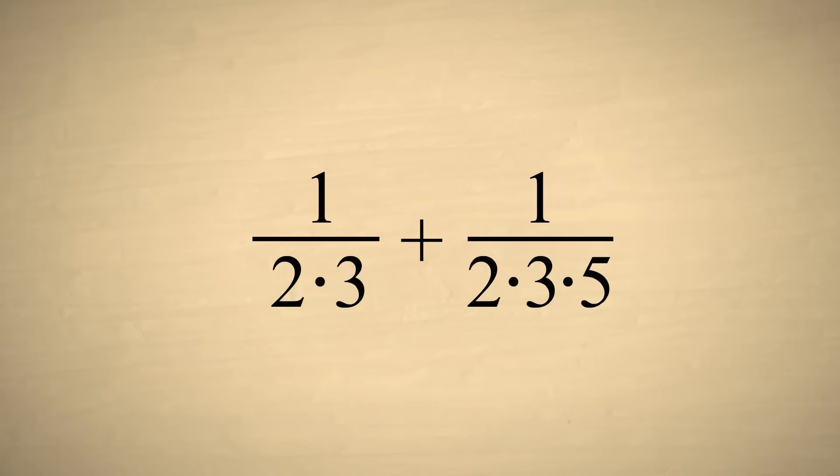Since our goal is to make these two denominators the same, let's see what is making them different. The first denominator is missing one factor of five that the second denominator has.